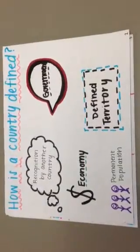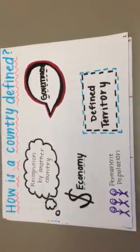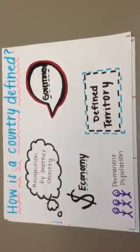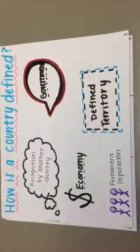How countries are defined. Countries are defined by recognition by another country, a stable government, a stable economy, defined territory, and a permanent population.